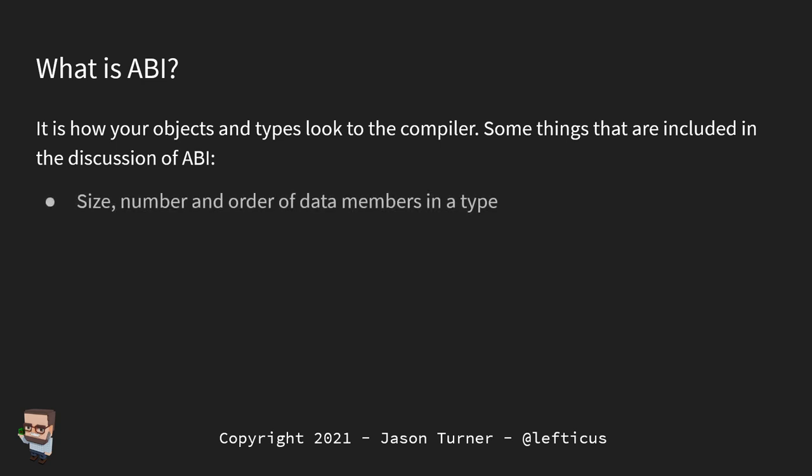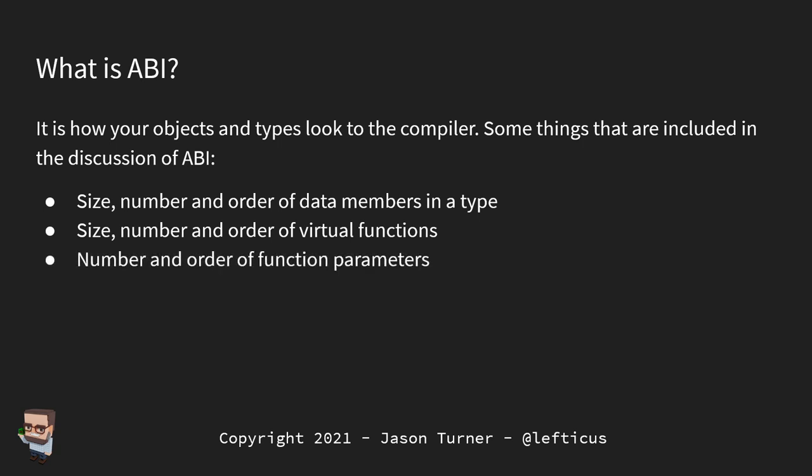Some of the things that come up when we discuss ABI: the size, number, and order of data members in a type; the size, number, and order of virtual functions — that one's interesting; and the number and order of function parameters — that one is probably the most obvious. If you change the order of function parameters and try to call expecting the old order, you're going to get the wrong result.